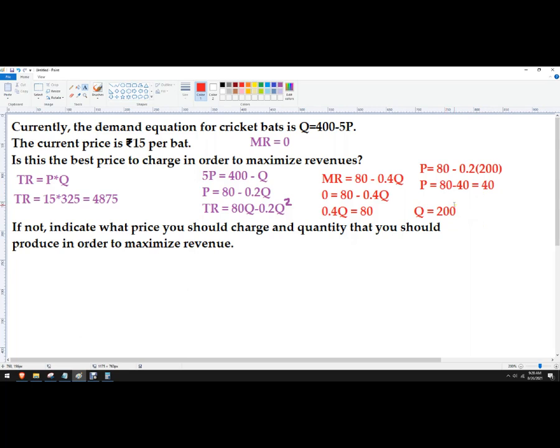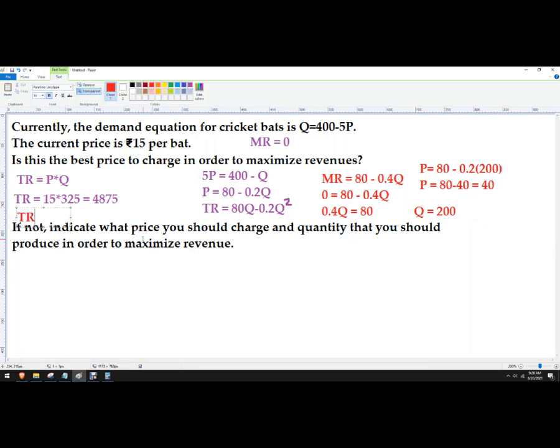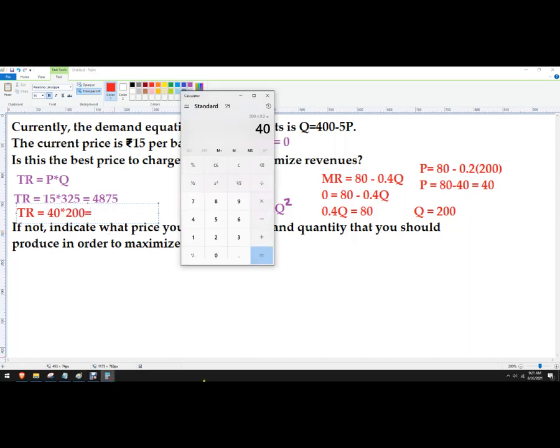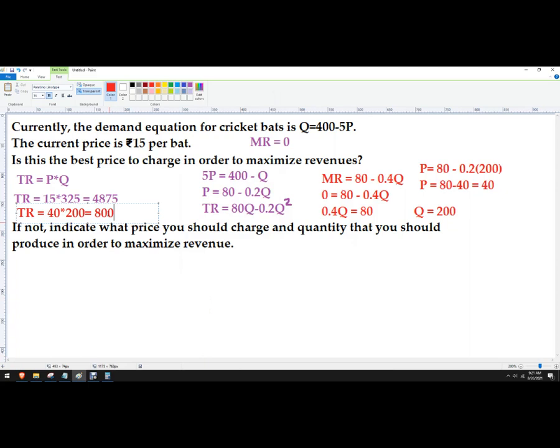The quantity should be 200. Let's see what our total revenue gives us. So we're going to charge 40 rupees, multiply that by 200. So 40 times 200 is 8,000. We basically doubled our revenue. So this is the most.